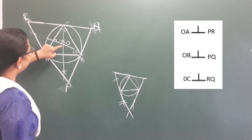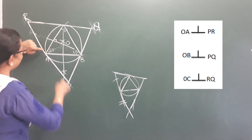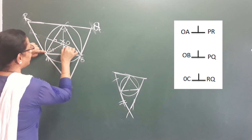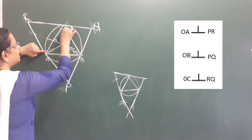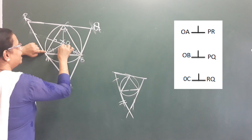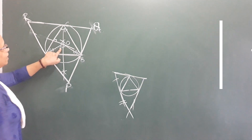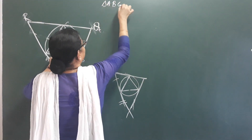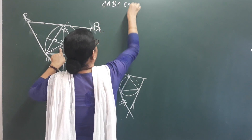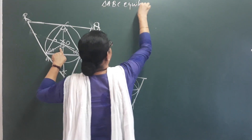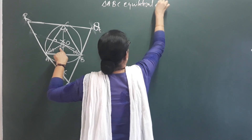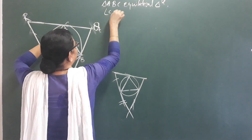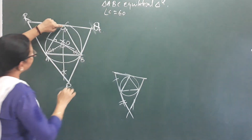What do we do here? First, this is 60 degrees — this is all 60 degrees. Let's join here. If you join here, this angle is 60. Triangle A, B, C — equilateral triangle. This angle C is 60 degrees.